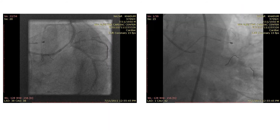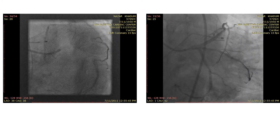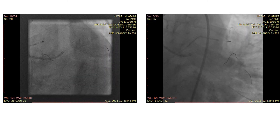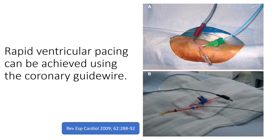And this is the result after post-dilatation. Rapid ventricular pacing can be achieved using the coronary guide wire itself without inserting a transvenous pacemaker. This can be achieved by placing the cathode, which is the black end or the black crocodile clip, to the end of the coronary guide wire, and the anode, which is the red one, to a needle that is inserted into the subcutaneous tissue after local anesthesia. A higher threshold may be required, and you have to make sure that the tip of the guide wire is in a smaller branch.